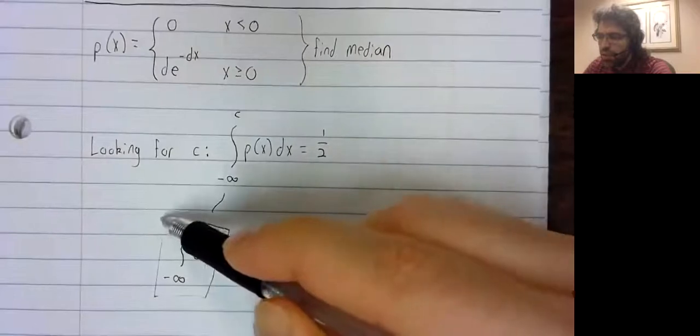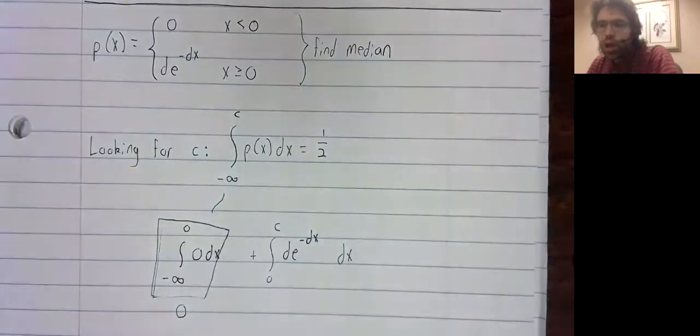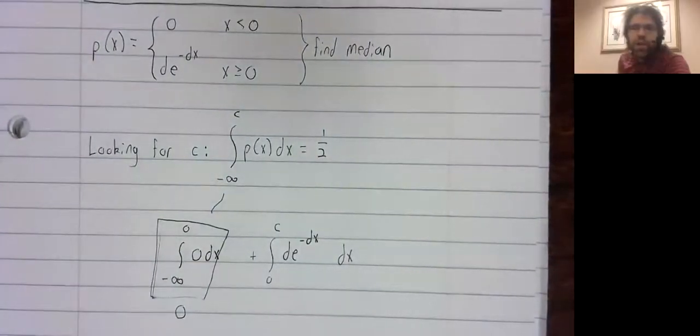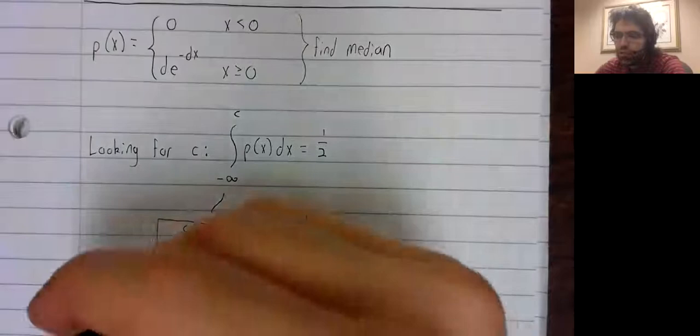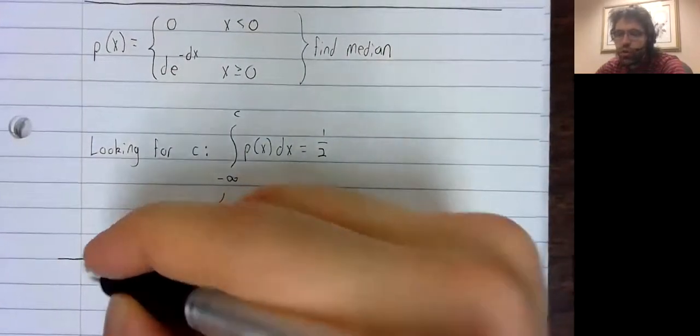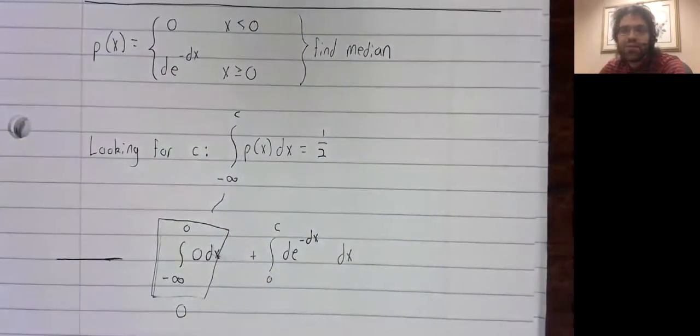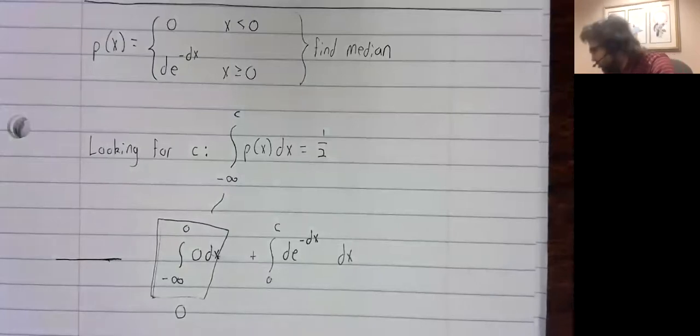The integral from negative infinity to zero... But informally, this integral is the area under the x-axis, and there is no area under the x-axis, so that's zero.